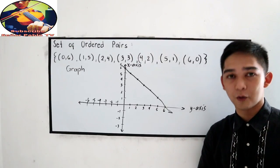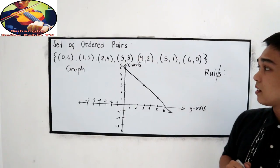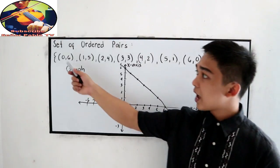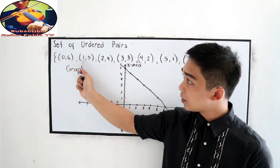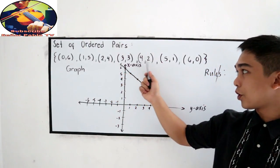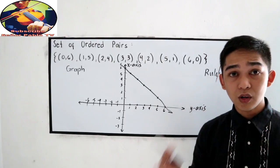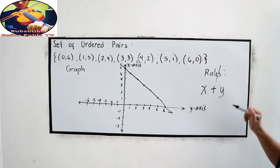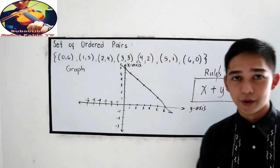Now, let us proceed to the last one. We have the rule. In this case, take a look at our X coordinate and Y coordinate. So, our rule is, if I am going to add the abscissa and the ordinate, the sum is 6. 1 plus 5, the sum is 6. 2 plus 4, 6. 3 plus 3, 6. 4 plus 2, 6. 5 plus 1 is equal to 6. And 6 plus 0 is equal to 6. So, our rule is that, if I am going to add the X coordinate plus Y coordinate, that is equal to 6. This is our rule.